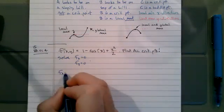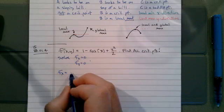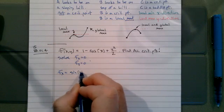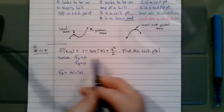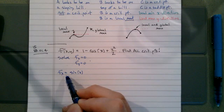So fx, derivative of one is zero, the derivative of cosine is negative sine, and the derivative of y squared over two with respect to x is zero. So this is the derivative in the x direction.